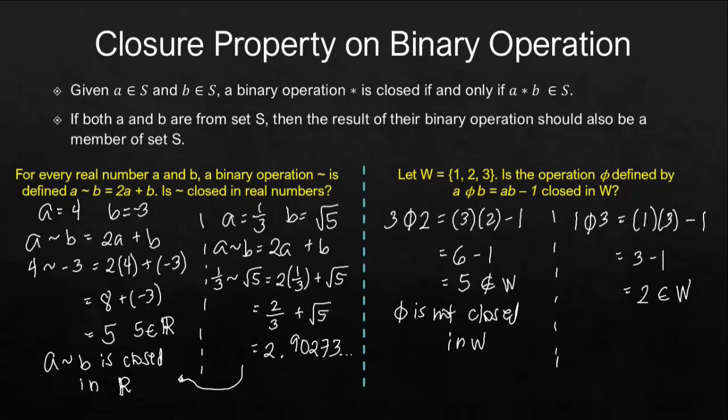So, even if 2 is an element of W, we found a counterexample. This is called a counterexample. That will tell us that phi is not closed in W.